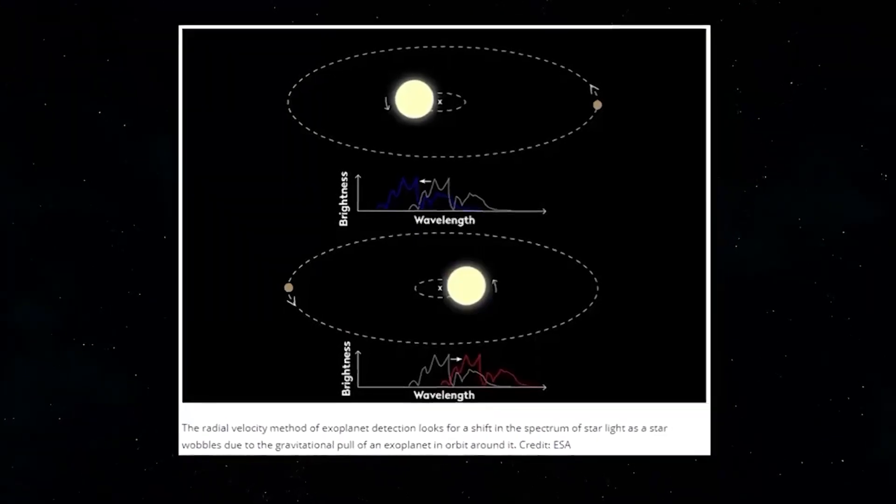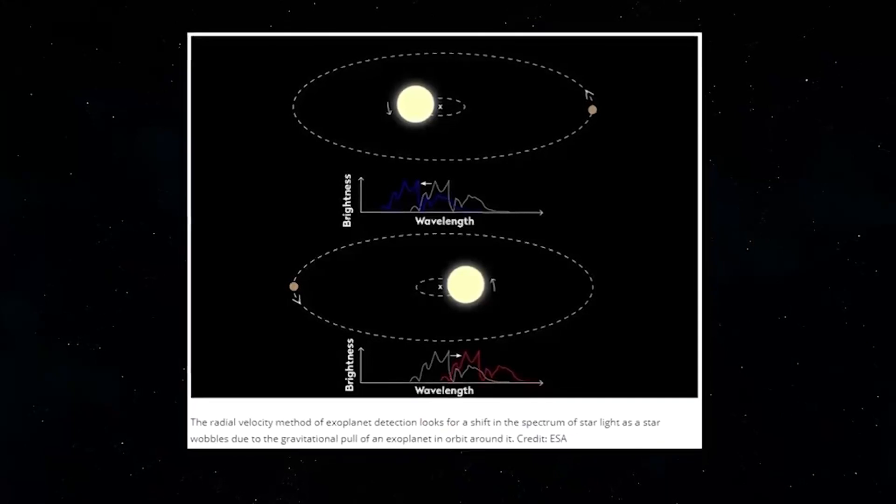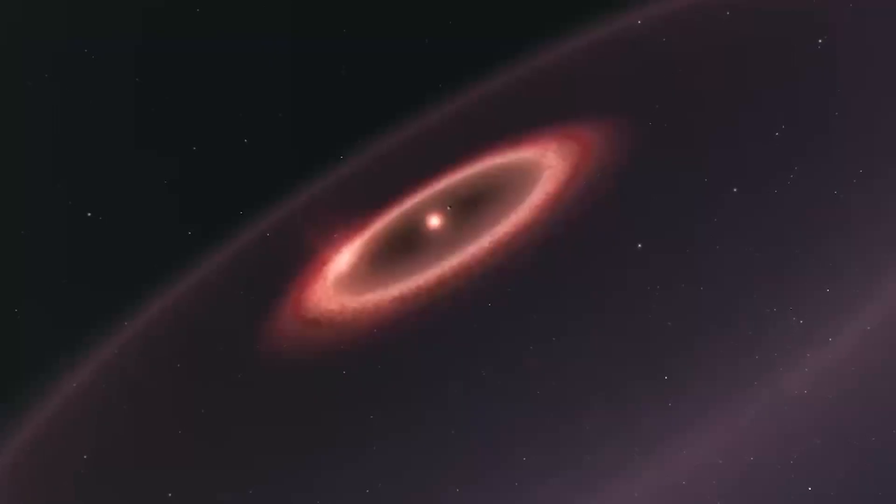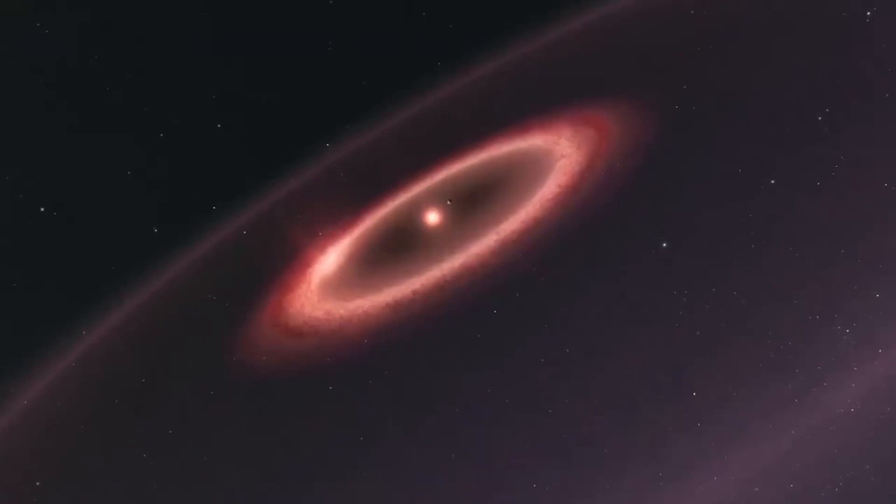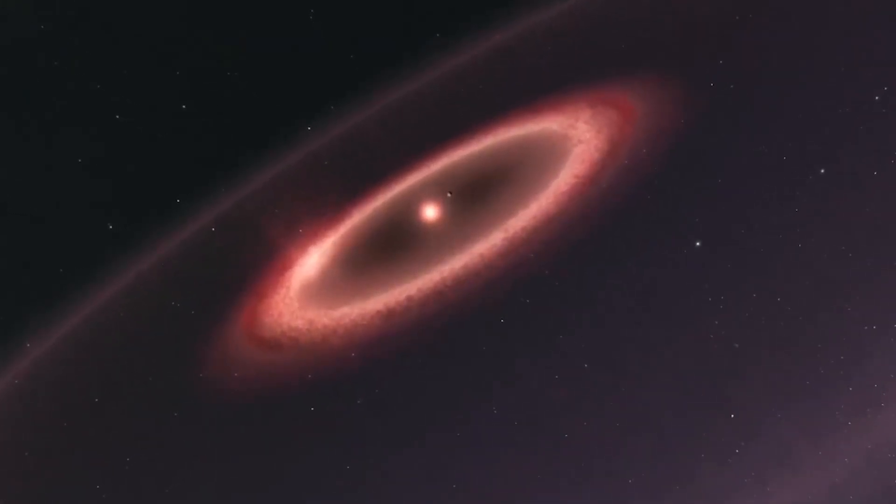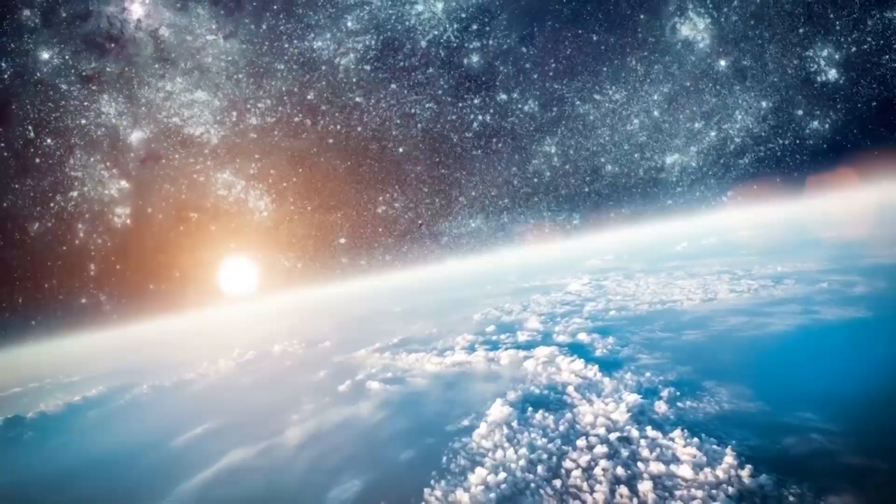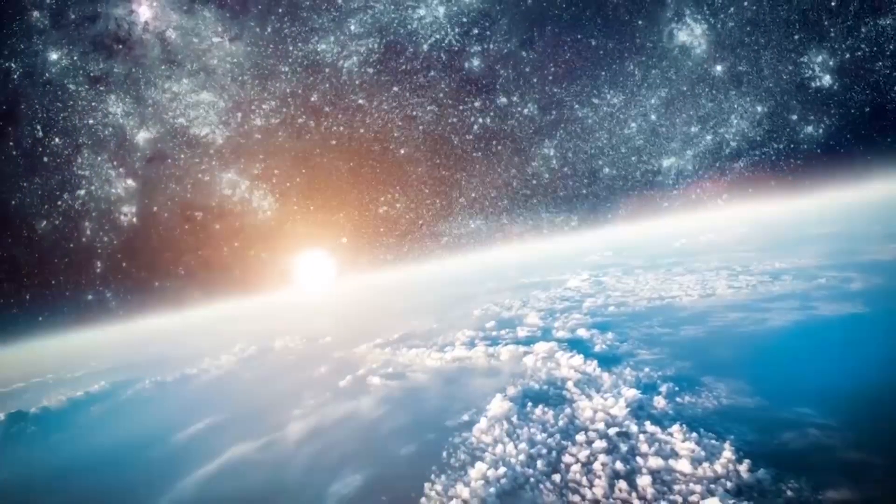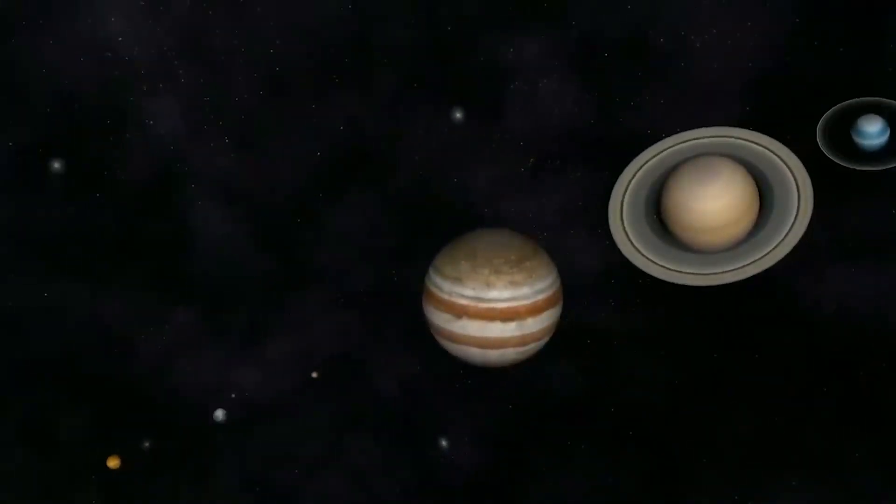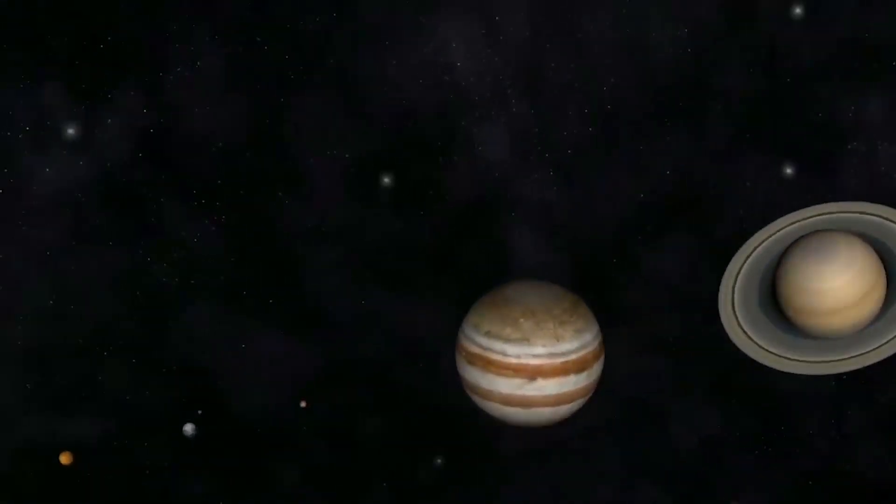Proxima d was found using the radial velocity of the host star. To be clear, the radial velocity of an object with respect to a given point is the rate of change of the distance between the object and the point. So, the radial velocity is the component of the object's velocity that points in the direction of the radius connecting the point and the object.